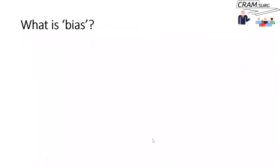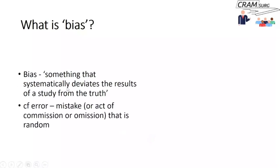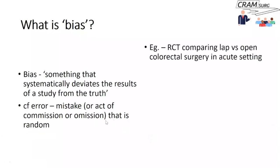Now we've had a quick revision of observational studies, let's move on to what bias is. Bias is something that systematically deviates the results of a study from the truth — the word 'systematic' is key. As opposed to error, which is simply a random mistake, not systematic. Bias can be an act of commission or omission.